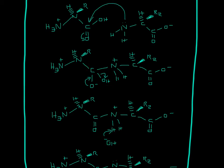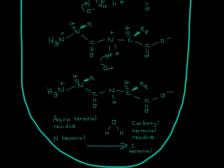This OH⁻ will come in and steal a hydrogen and then become water, because now it's H₂O. So now since it's H₂O and this only has three bonds and a lone pair, it has zero charge. That's how a peptide bond is created, and that is the mechanism for it.